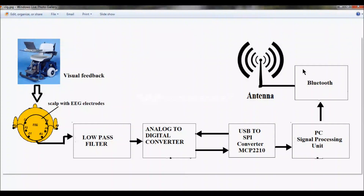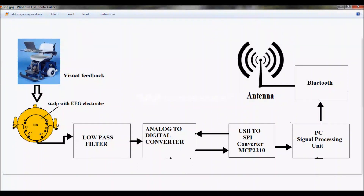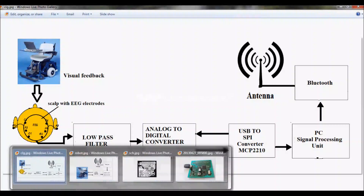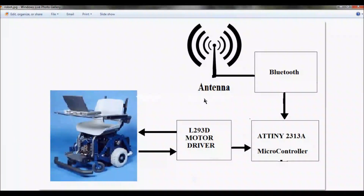The data is transmitted through Bluetooth to our wheelchair. The block diagram of the wheelchair is over here. The data transmitted by the Bluetooth will be received by the receiver Bluetooth in our wheelchair. Then this data will be fed into a microcontroller ATtiny2313, then given to the motor driver L293D, and then our wheelchair will be controlled.